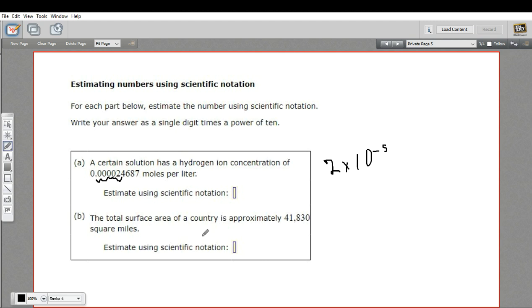The next part of this problem says the total surface area of a country is approximately 41,830 square miles. To estimate this, we round down to one digit. Keep the 4 since there's a 1 afterwards. Count the spaces to move the decimal point between the 4 and the 1: one, two, three, four. This is a big number, so we have a positive exponent. We write this as 4 times 10 to the 4th.